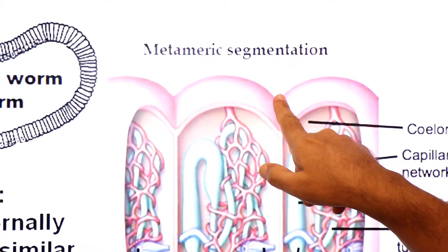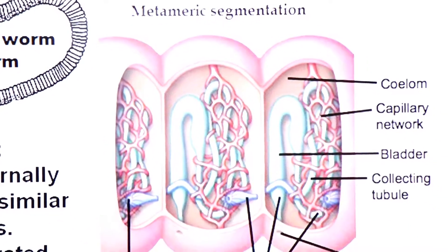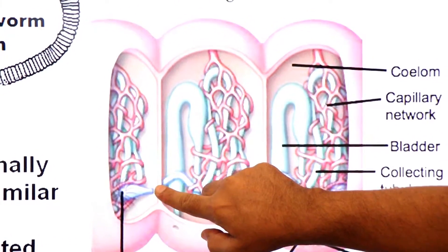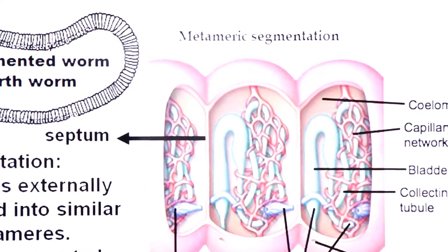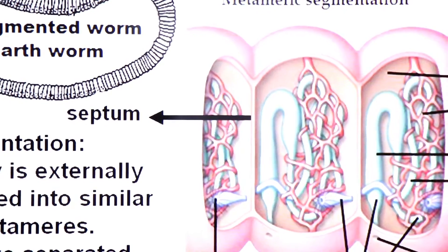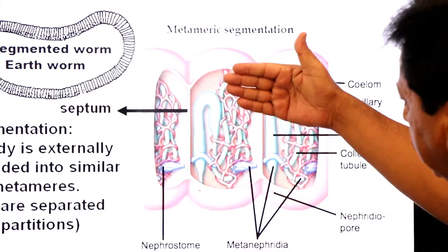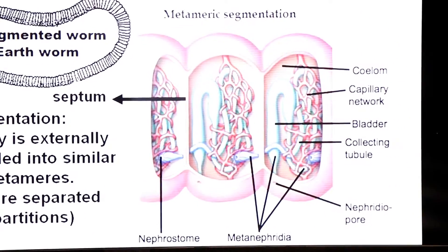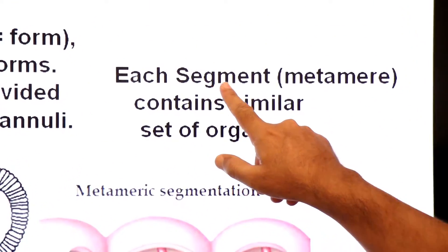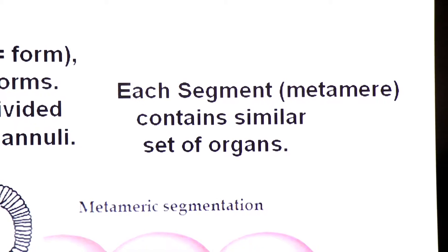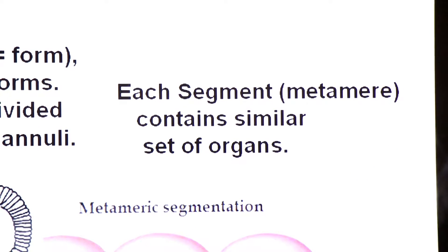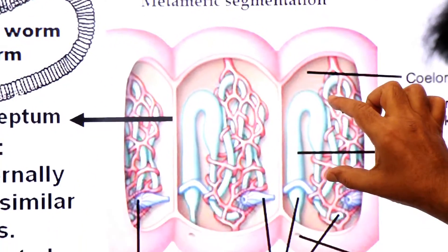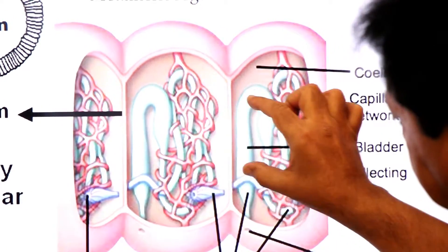The body is divided both externally and internally. These partitions are called — singular: septum, plural: septa. Each segment or metamere contains a similar set of organs. So these metameres are body segments divided externally and internally, each containing a similar set of organs such as tubular structures.